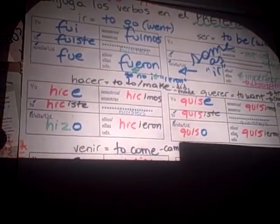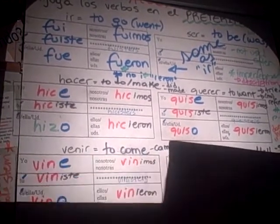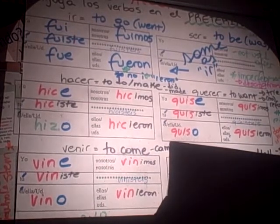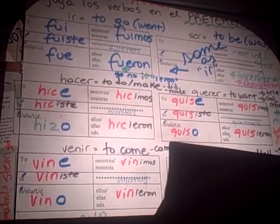For venir, what is the whole stem change? It's V-I-N. The reason I want you to call these whole stem changers instead of E to I is because E to I is a basement change - I don't want you to confuse that. The whole entire box changes to V-I-N. So: vine, viniste, vino, vinimos, vinieron.